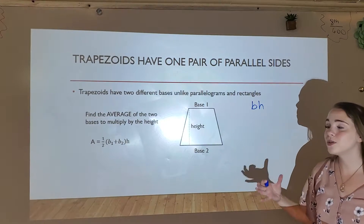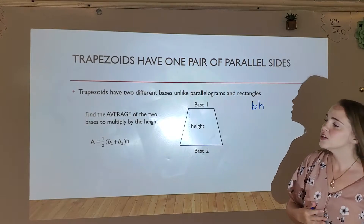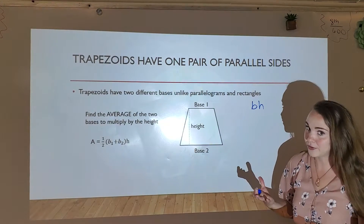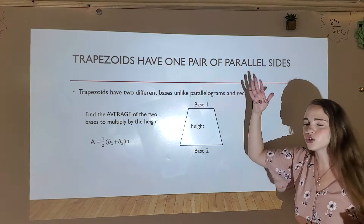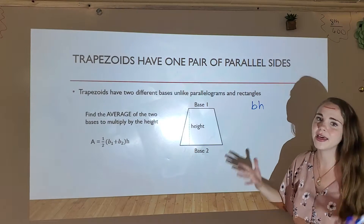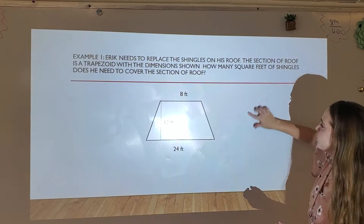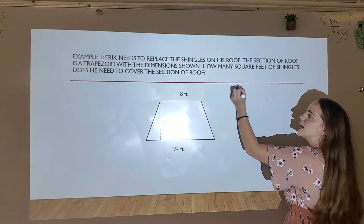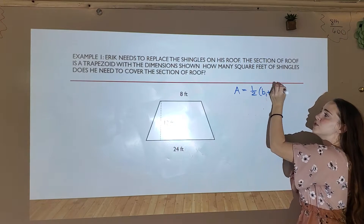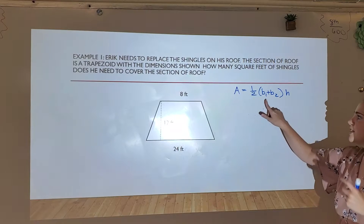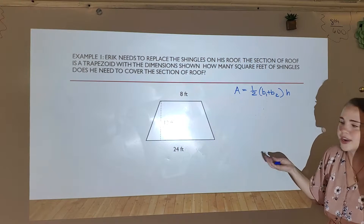So what we do is we find the average of the two bases and then we multiply by the height. Instead of just using one of the bases or choosing, we find the average, then multiply. So we end up with the formula: area equals one-half times b1 plus b2 times h. And that's just adding the bases then dividing by two to find the average.